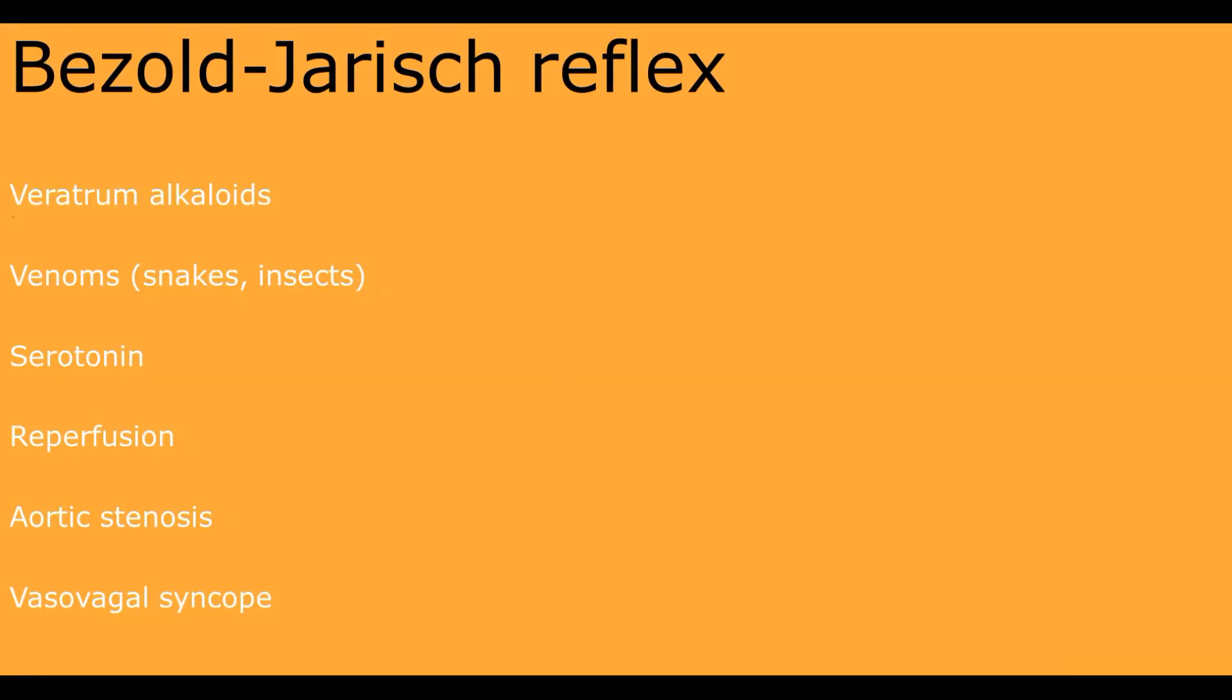This reflex is high yield to know because it can be elicited by a variety of chemical agents. In the first experiment, this reflex was elicited by intracoronary injection of veratrum alkaloids. That's how it was discovered, and that's why this reflex is considered a chemoreflex.